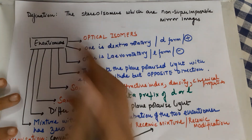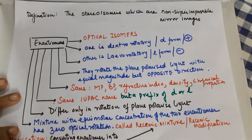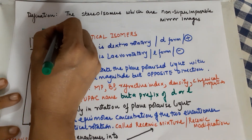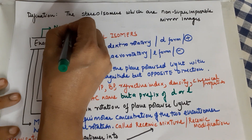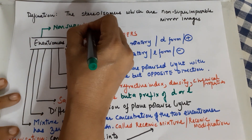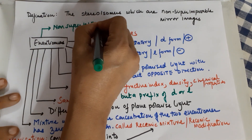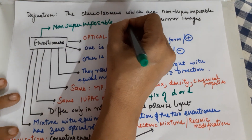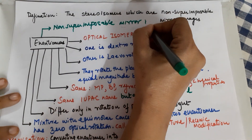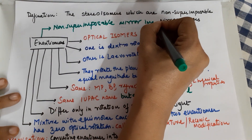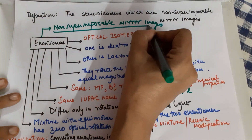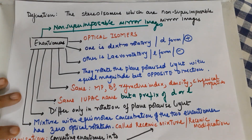They are optical isomers, and the most important thing is they are non-superimposable mirror images. This is the definition of enantiomers.